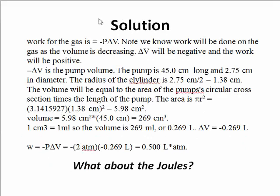Here we have a solution. Work for this gas—work done on the gas in the pump—is negative P delta V. Note, we know work will be done on the gas as the volume is going down. Delta V will be negative and the work will be positive. So we expect, in the absence of heat, this will increase the energy of the gas.